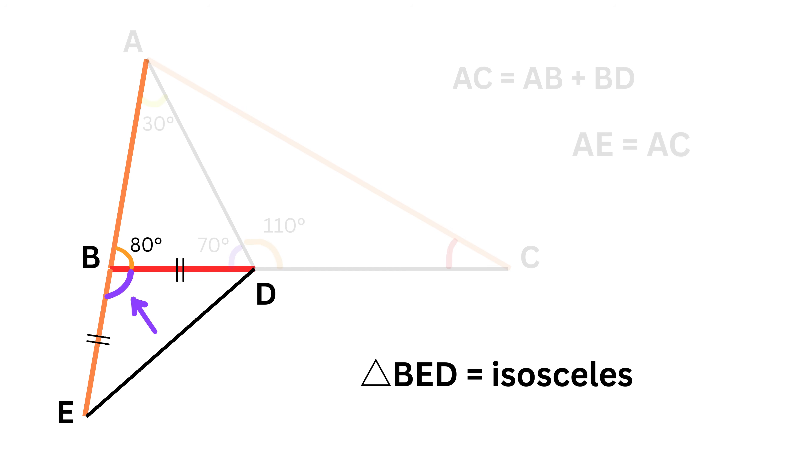Now what will be this angle? See, this is 80 degrees and the sum of both these angles form a straight angle whose value is 180 degrees. So this angle is equal to 100 degrees, because 100 plus 80 is 180.